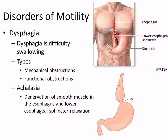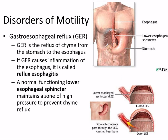Achalasia means failure to relax — it's functional dysphagia where you can't relax the muscles so food can't get down. For example, if the medulla oblongata can't signal the lower esophageal sphincter (LES) to relax, food gets stuck in the esophagus. On the upside, it's far enough down that you can still breathe, but the food sits there — that's a type of functional dysphagia.